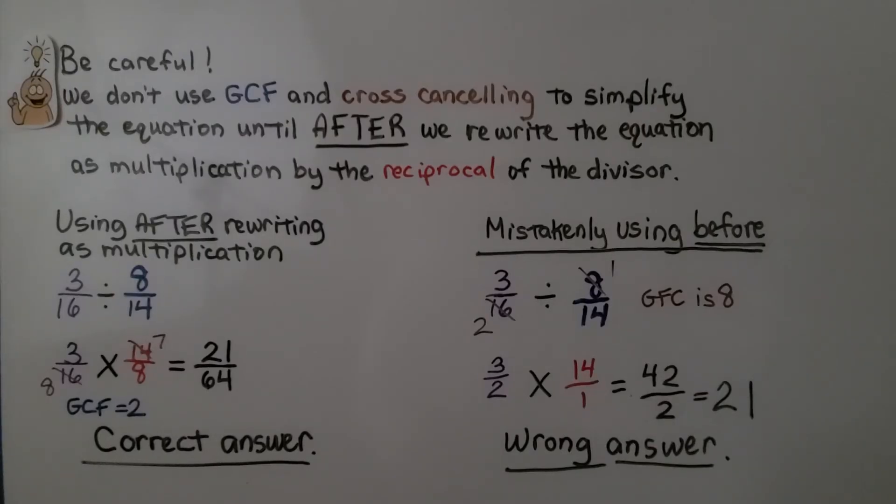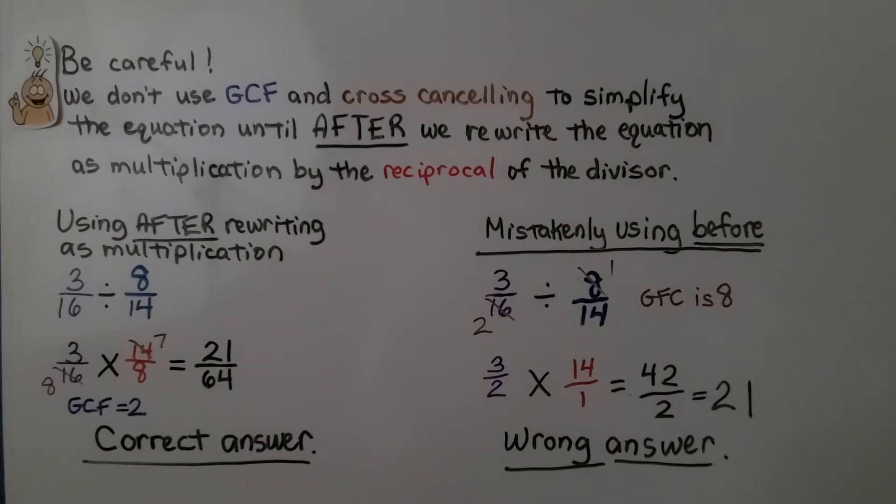We have to be careful. We don't use the greatest common factor in cross canceling to simplify the equation until after we rewrite the equation as multiplication by the reciprocal of the divisor.